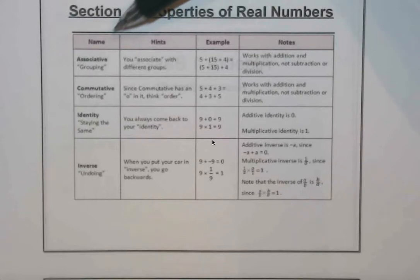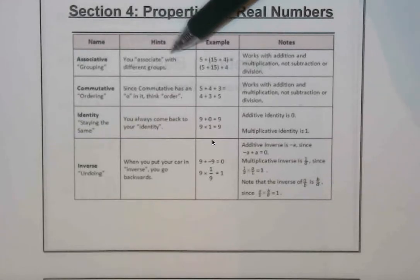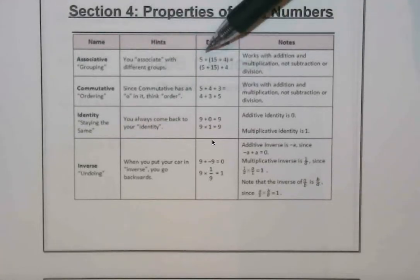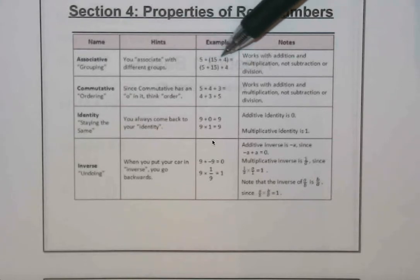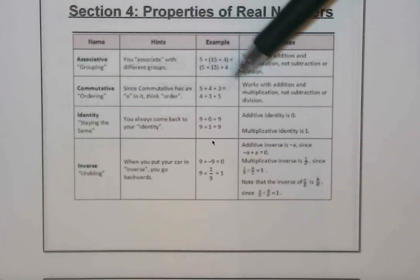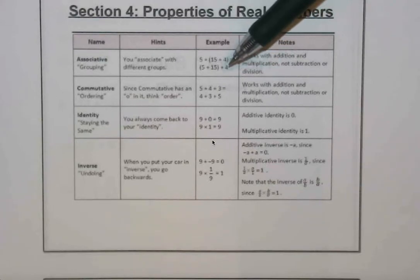With this first property, the associative property, this hint is going to help us out saying that we associate with different groups. If we have three numbers being added in an order, doesn't quite matter the order, we could rearrange those so that some numbers are out of order. Or if we put parentheses around a different set, it still will give that same outcome.